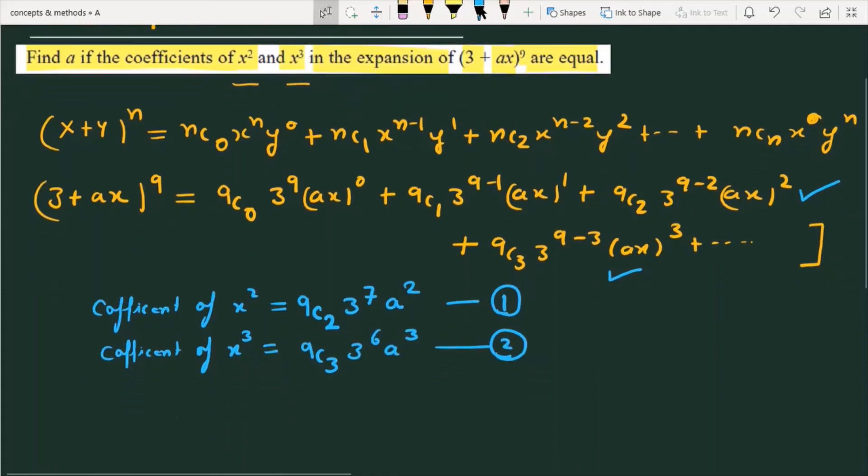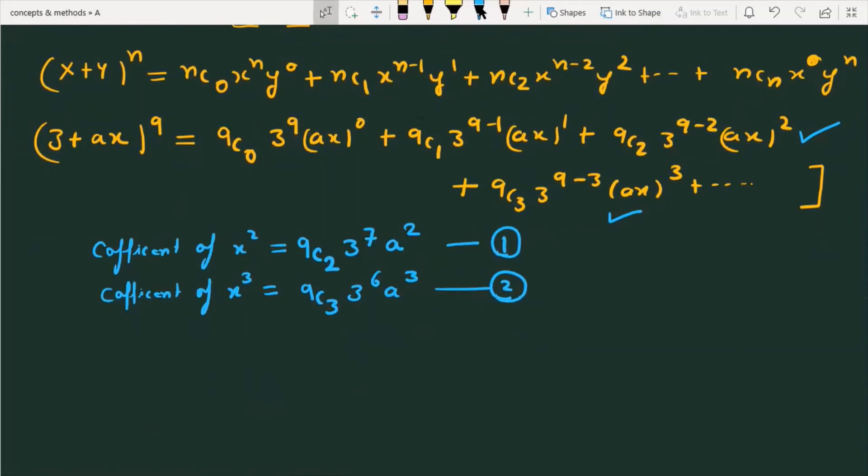According to the question, these two are equal. The coefficient of x² equals the coefficient of x³, and we need to find the value of a. So we equate both: ⁹C₂ · 3⁷ · a² = ⁹C₃ · 3⁶ · a³.